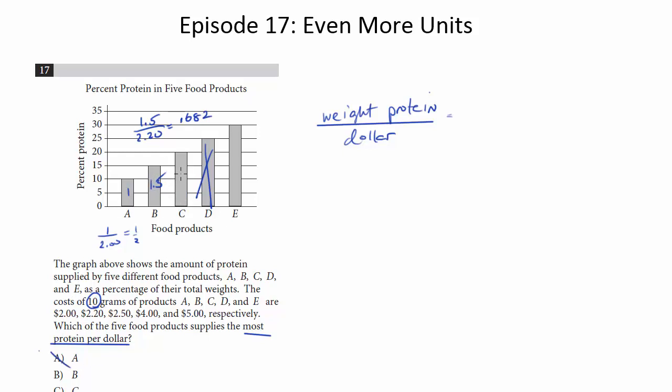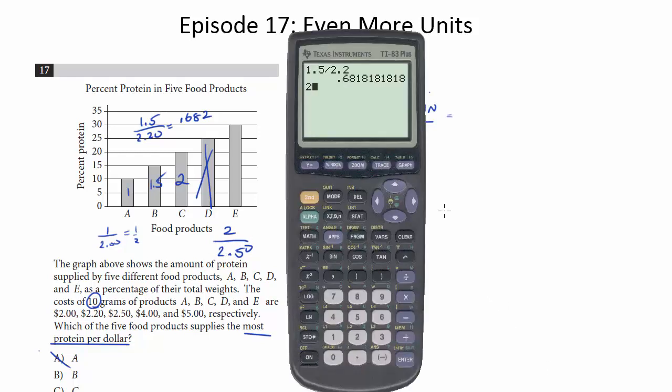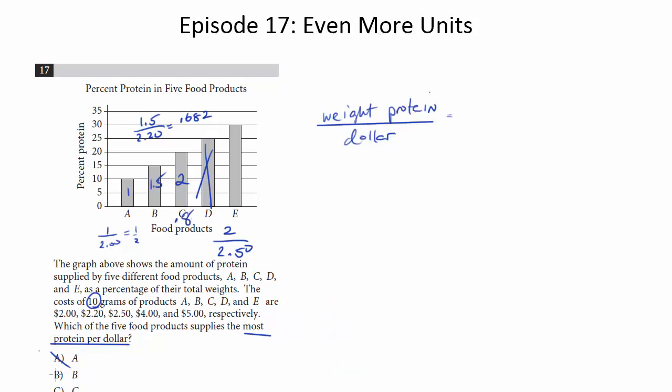C is 20% protein. So that's going to be 2 grams, right? 20% of 10 is 2. And now we'll do 2 divided by 250. Get 0.8. So that's even higher. So we can get rid of B.